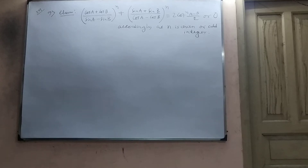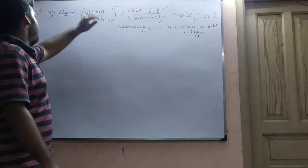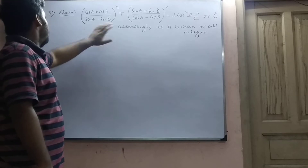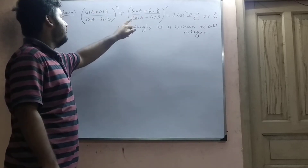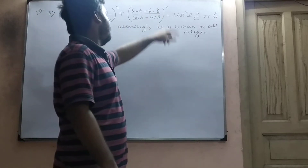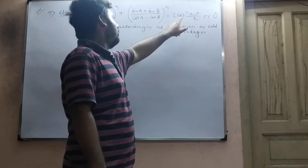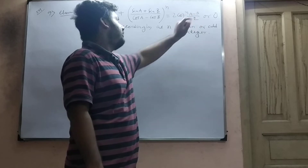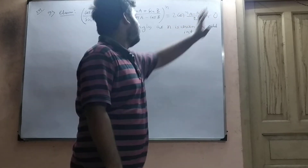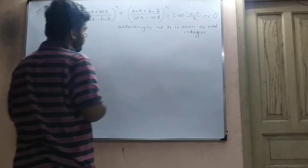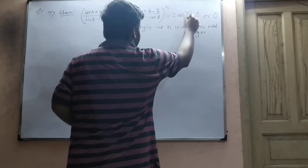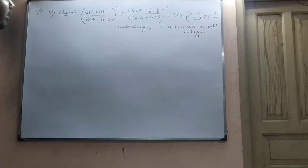That is another 5 mark problem. Problem number 9. What is your claim? Your claim is: cos A plus cos B over sin A minus sin B, whole to the power N, plus sin A plus sin B over cos A minus cos B, whole to the power N, equals 2·cot^N((A−B)/2) when N is even, and 0 when N is odd.